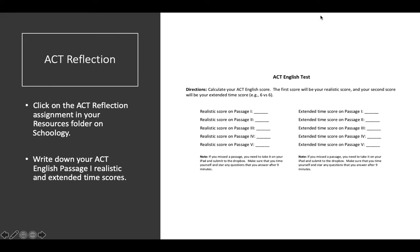On page 1, you're going to put down how many you got right within the time limit — that's the first number I write down. If I write down like 6 versus 6, it's the first number. The second number is how many you got right with all the time you needed. Make sure going forward you star any questions you answer after 9 minutes, but you answer all of them.